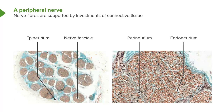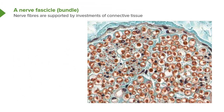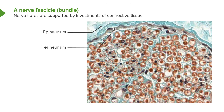It's a bit hard to see the endoneurium at this magnification, but in the next section it will be clearer. Here is an image of a nerve fascicle or nerve bundle at higher magnification. On the very outside you can see a bright green stained component — that's collagen. It's part of the epineurium that penetrates from the outer capsule, wrapping around the whole nerve and dividing it into nerve fascicles. Each nerve fascicle itself also has another connective tissue component called the perineurium, labelled here.